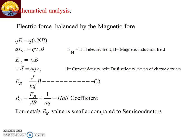Now let us look at the mathematical analysis. The upward force QE is balanced with the downward force QVB: QEH = QVD·B. Since velocity and magnetic field are perpendicular, sin θ = 1, so EH = VD·B. From the definition of current density, J = NQ·VD, where N is the number of charge carriers. Substituting VD = J/NQ, we get EH = JB/NQ.